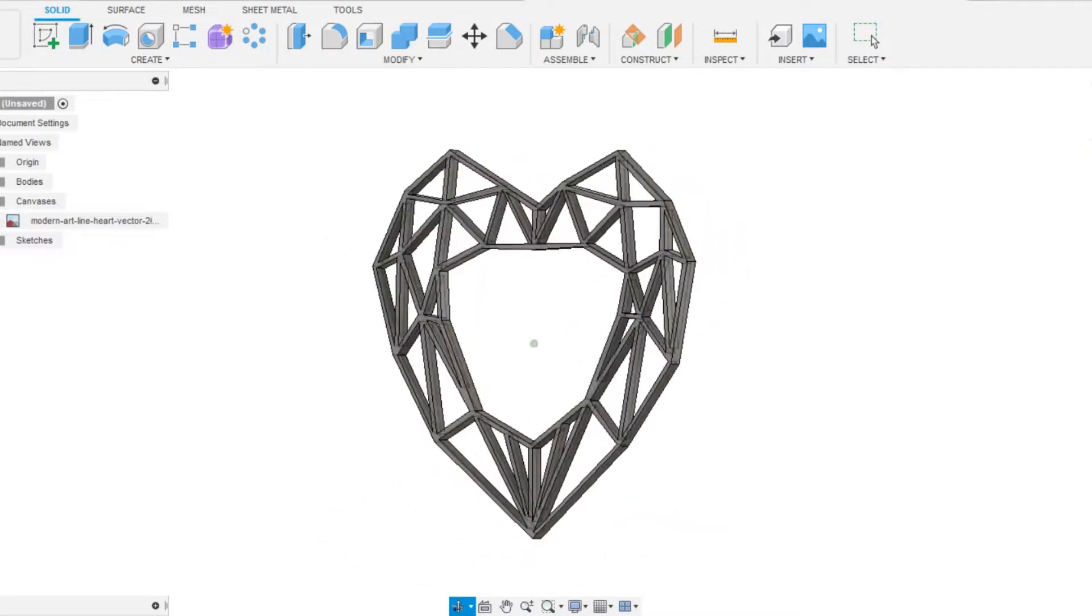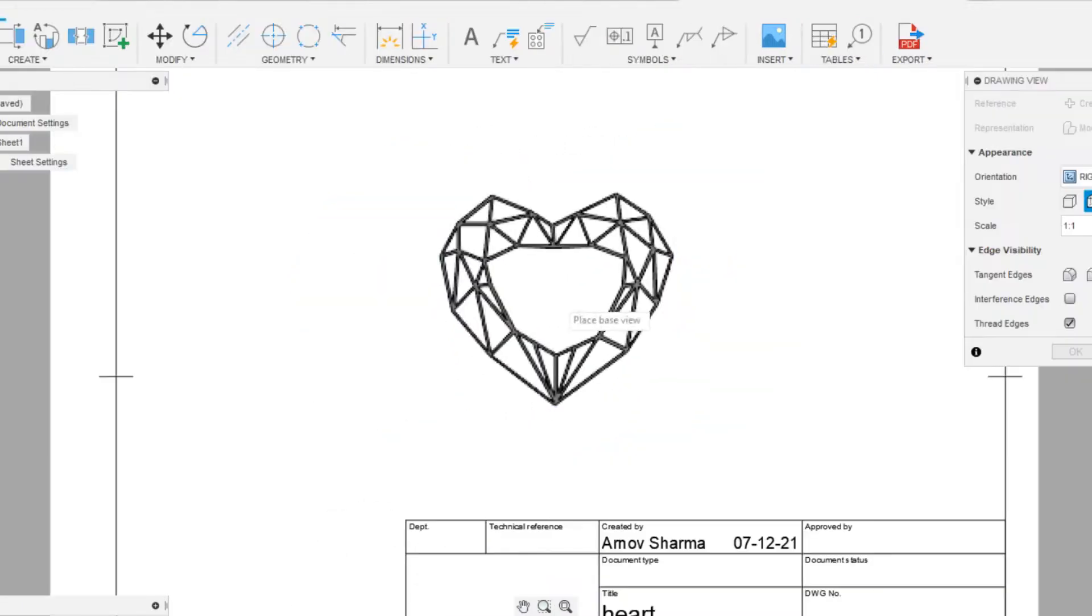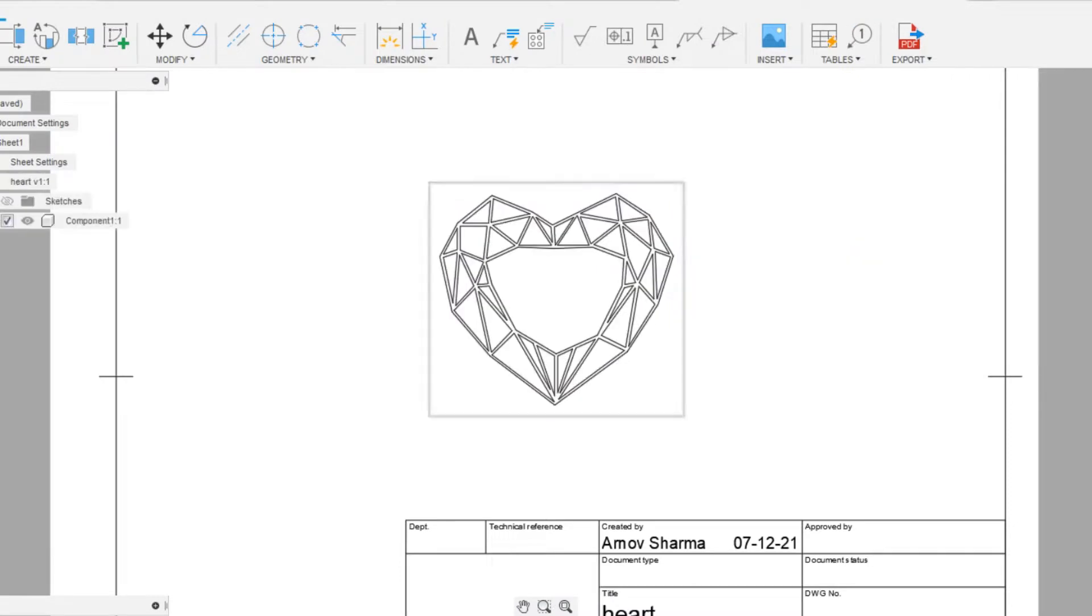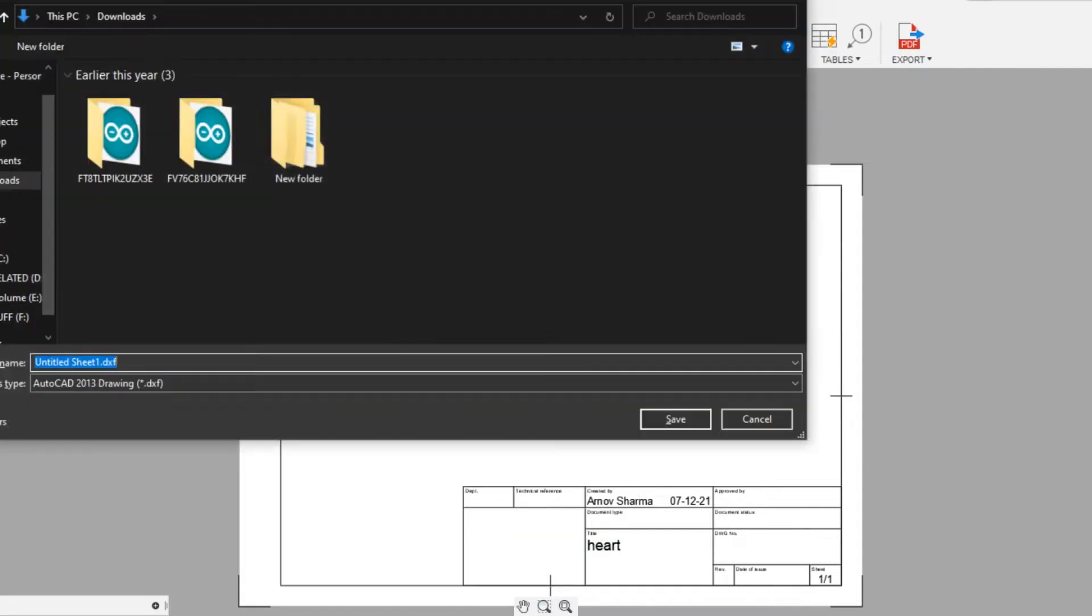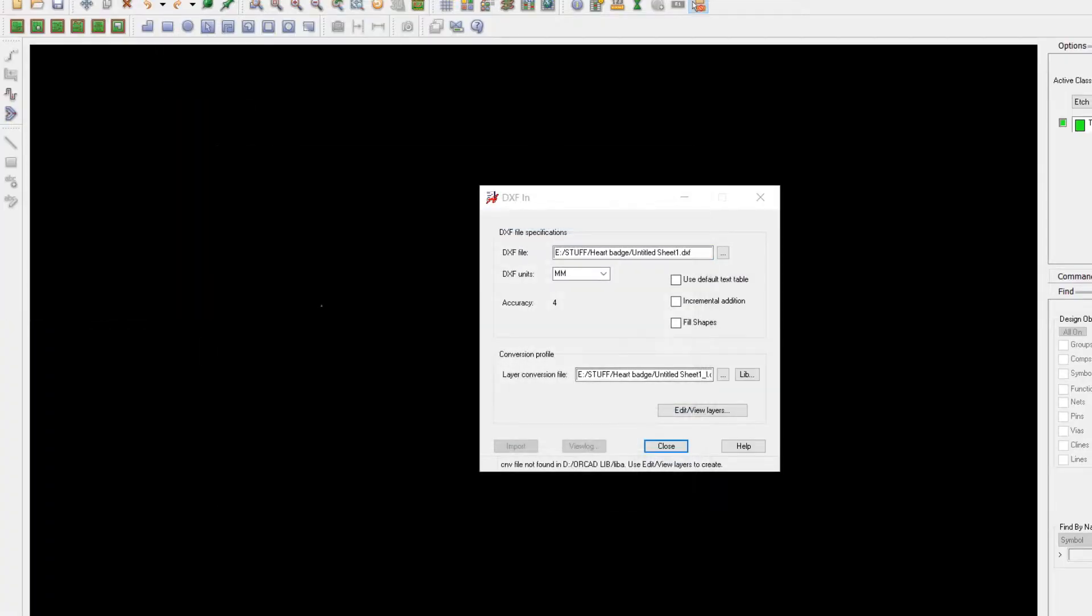Now we have a 3D heart shape which will act as a base for our PCB design. Let me show you how my plan is to convert this 3D shape into a drawing and then export the top layer's DXF file so my ORCAD PCB suite can import this DXF file.